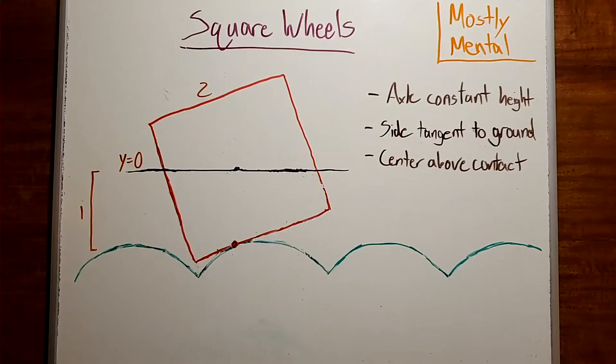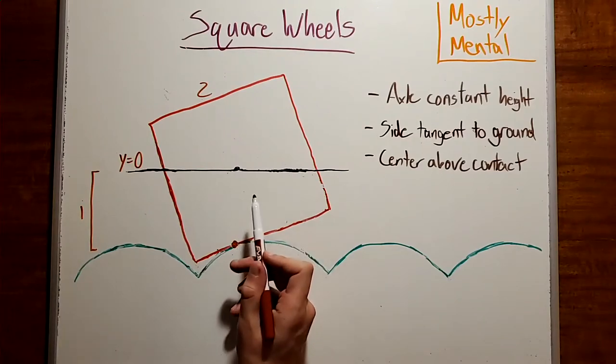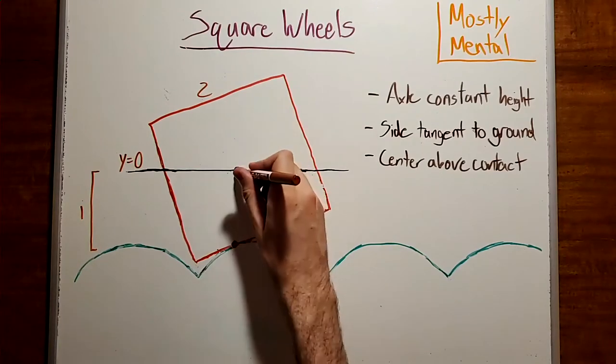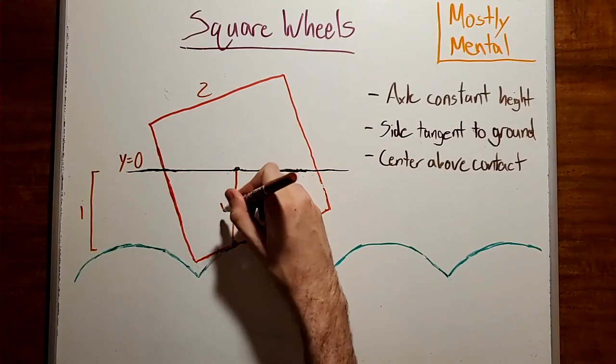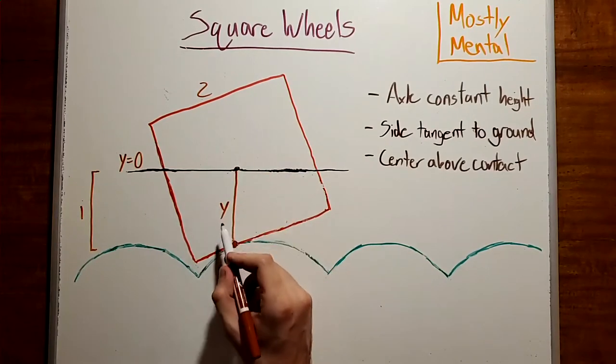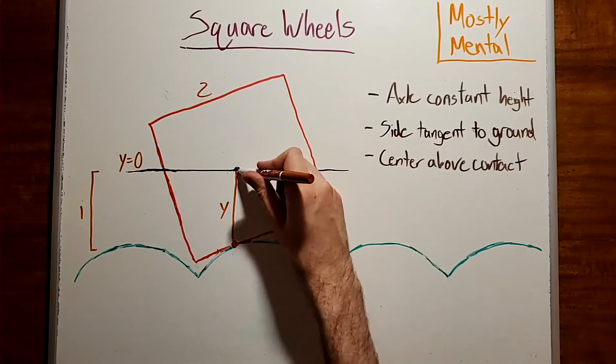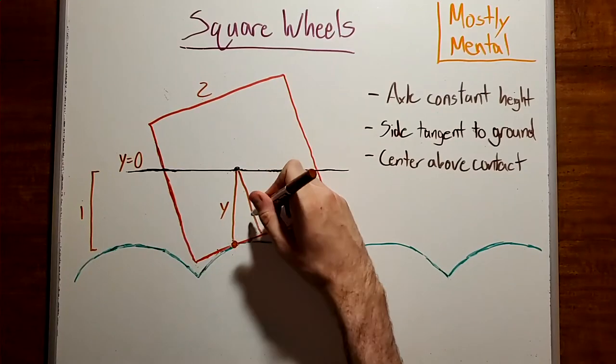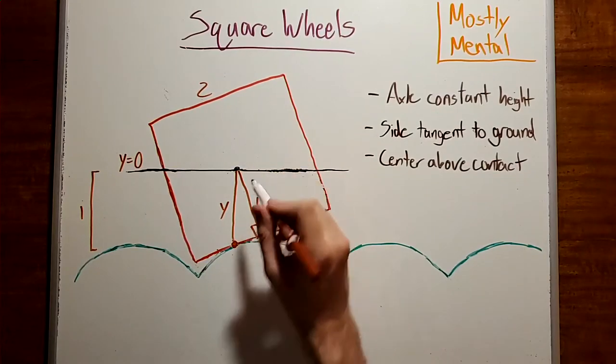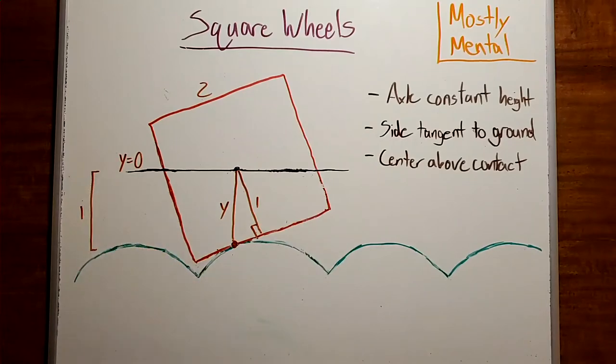Now let's look at the square at some point during its rotation. The center will be some distance above the intersection point. Let's call that y. And the perpendicular from the center to the side will have length 1, since it's just this distance here.